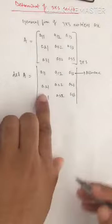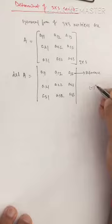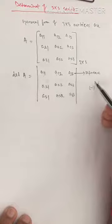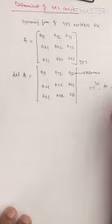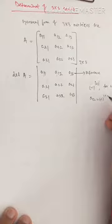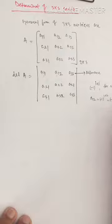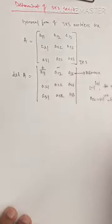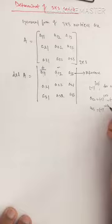The sign of each element a₁₁, a₁₂, and a₁₃ is determined by the formula (−1)^(i+j), where i denotes the row and j denotes the column. For a₁₁: (−1)^(1+1) = (−1)² = +1, so a₁₁ has a positive sign. For a₁₂: (−1)^(1+2) = (−1)³ = −1, so a₁₂ carries a negative sign. For a₁₃: (−1)^(1+3) = (−1)⁴ = +1, so a₁₃ carries a positive sign.